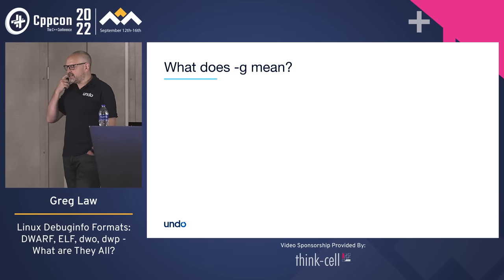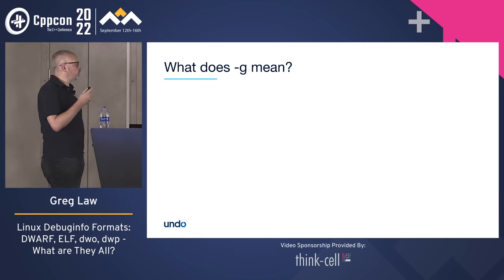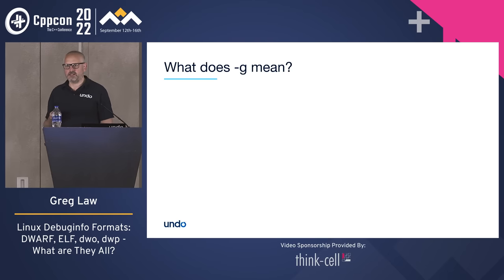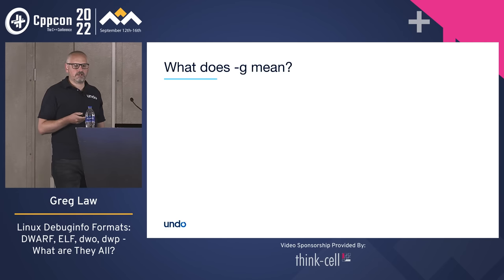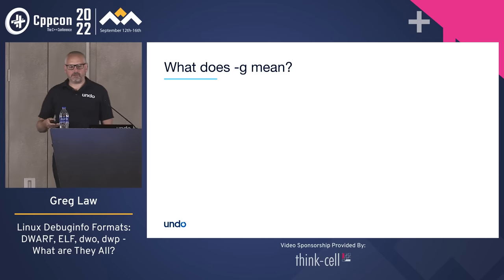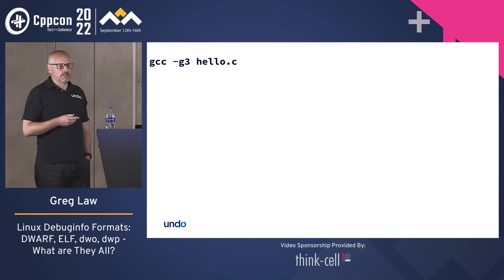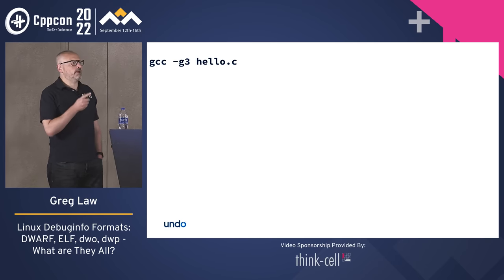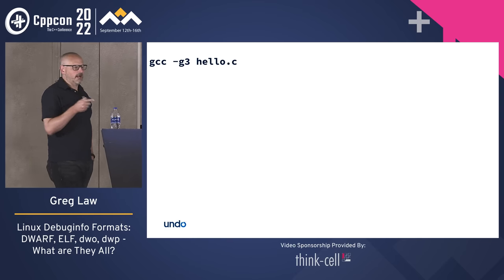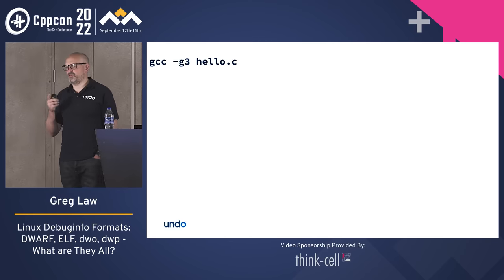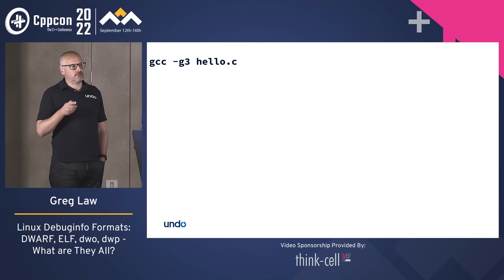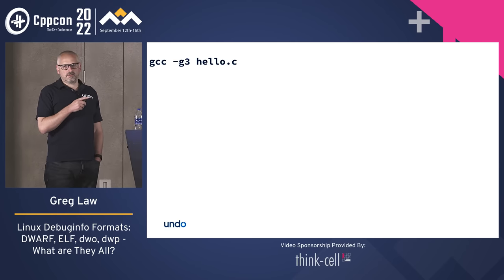Let's start at the beginning: dash-G. We all know what dash-G does — it makes the code debuggable in GDB or whatever our debugger is; we can do that nice source-level debugging. But let's think about what it actually does. We can also do dash-G3 to get a bit more debug info. I was hoping to get more detail about what the different dash-G options are. After a conversation on Twitter, the conclusion is: nobody knows. I tried reading documentation but didn't go as far as reading the source code.